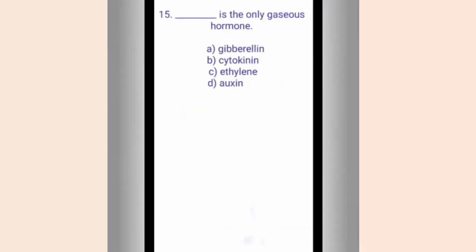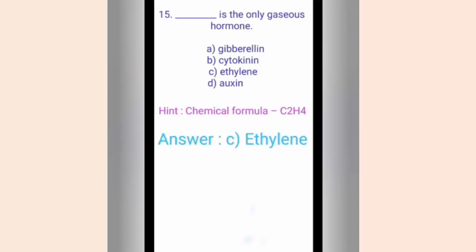Question fifteen. Dash is the only gaseous hormone. The options are A. Gibberlin, B. Cytokinin, C. Ethylene, D. Auxin. The hint shows the chemical formula C2H4. The correct answer is option C, Ethylene. Ethylene is produced in large amounts by tissues undergoing senescence and ripening of fruits.